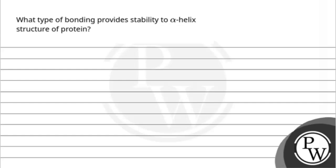Hello, let's read the question. The question says: what type of bonding provides stability to the alpha helix structure of protein? The question is asking which type of bonding provides stability to the alpha helix structure of protein. The key concept here is: